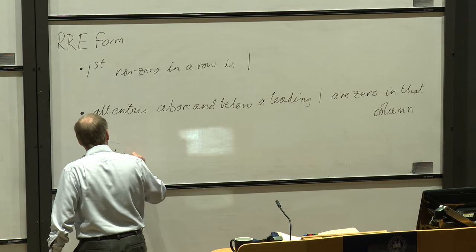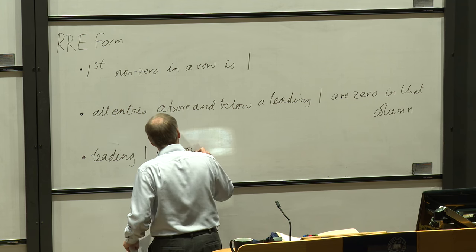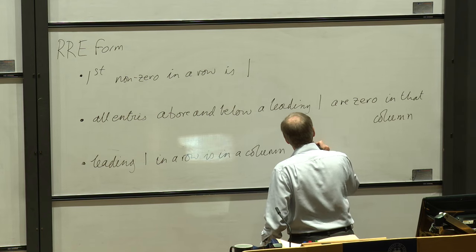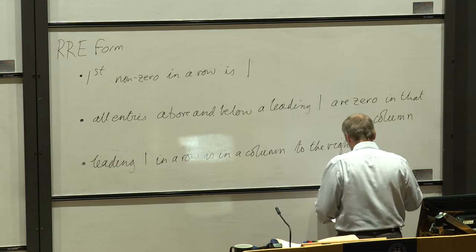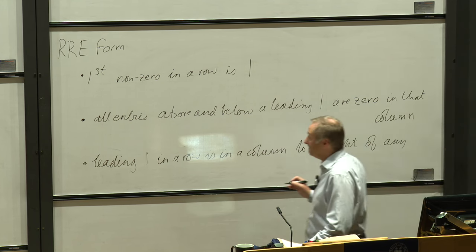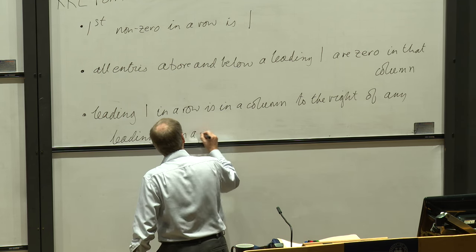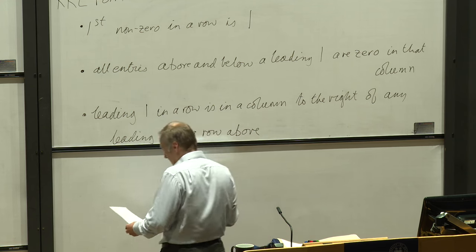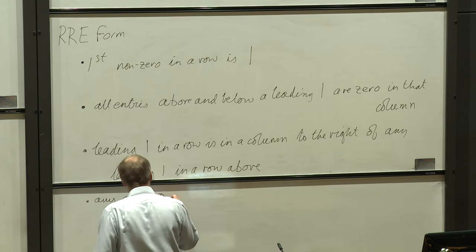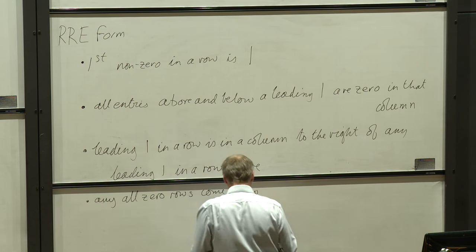The leading 1 in a row is in a column to the right of any leading 1 in a row above. And finally, any all-zero rows come below non-zero rows.